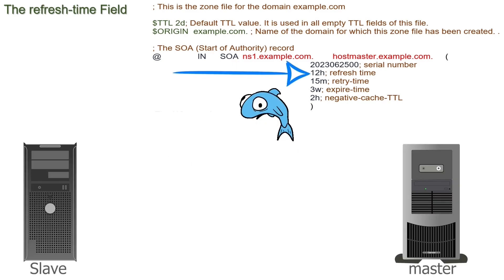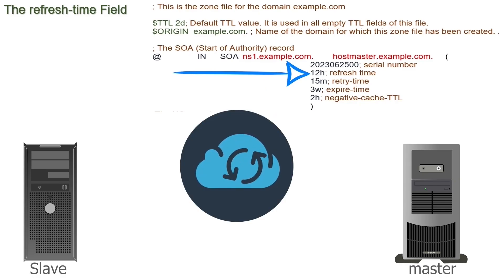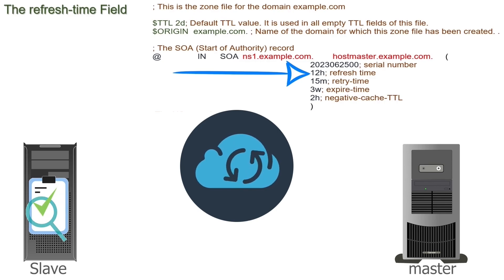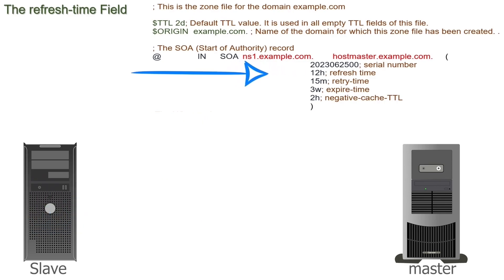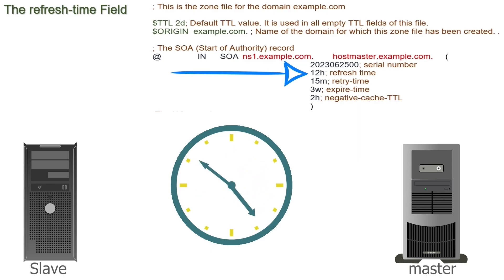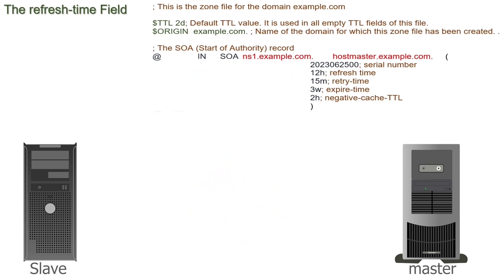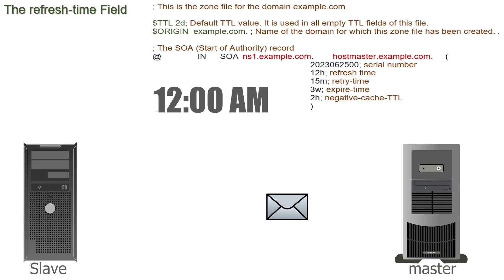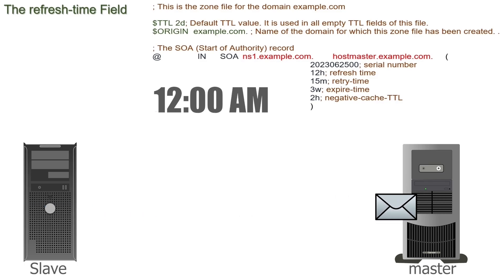The refresh time field sets how frequently the slave name server checks the master for an update. In this zone file, this time is set to 12 hours, so the slave checks for an update every 12 hours. For example, if the slave tries to reach the master at 12 AM and connects, it will try again at 12 PM. But if it fails, it will try again after the retry time.